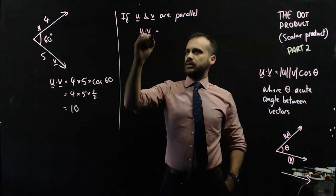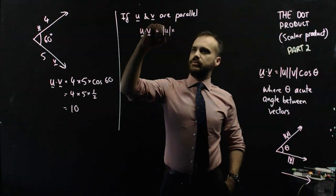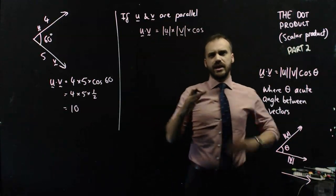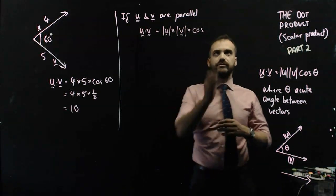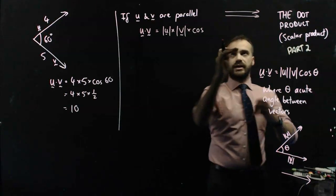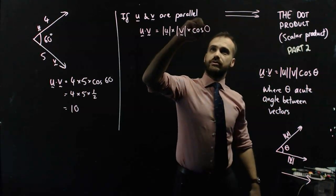Well, we get the magnitude of u times the magnitude of v times cos, and what's the angle between two parallel vectors? Well, one vector looks like that, and the other vector looks like that, and we can move those vectors right on top of each other so the angle between them is 0.